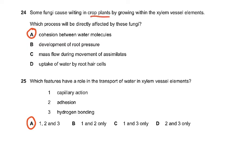Question 24: Fungi cause wilting in crop plants by growing within the xylem vessel elements. Which process will be directly affected by these fungi? The answer was A because the cohesion between the water molecules. If it's blocked, the water molecules cannot show cohesion. Directly affected will be the cohesive forces of the water.